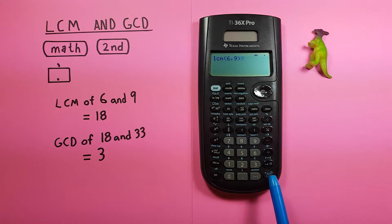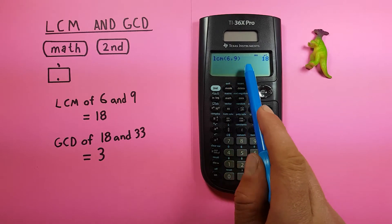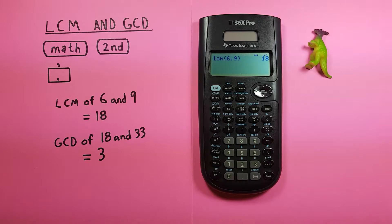Close your brackets and press enter and there you see the least common multiple of six and nine is 18.